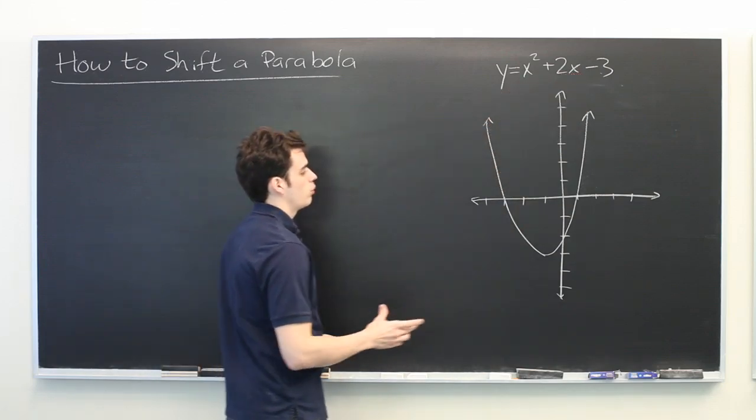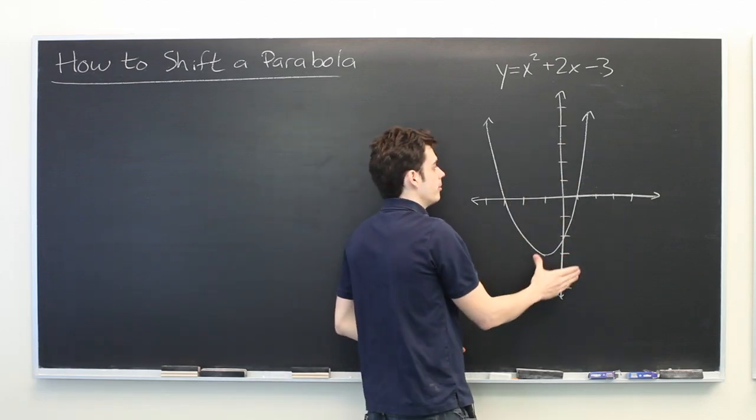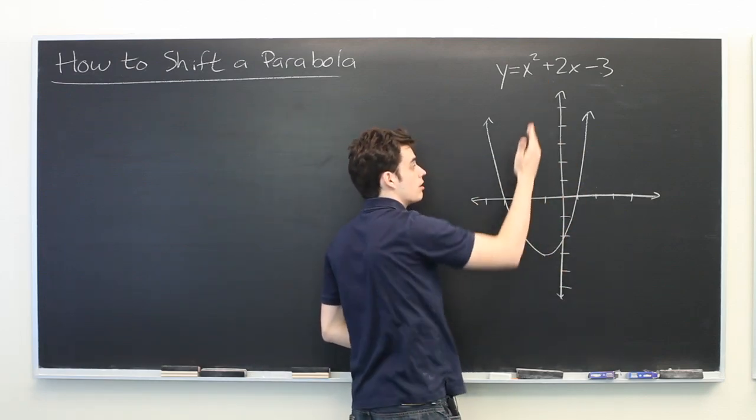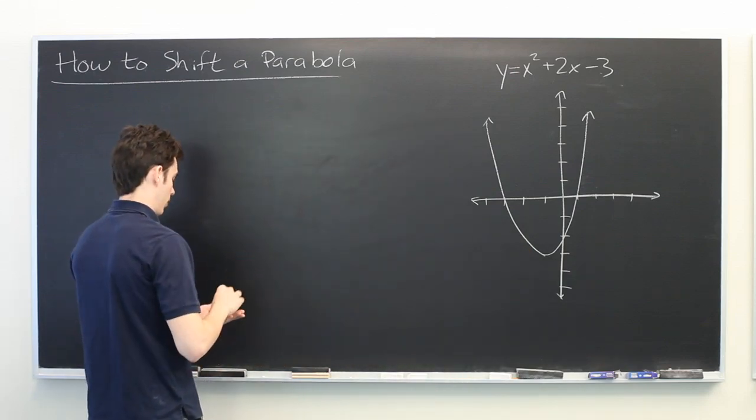And our question is, if we want to shift the graph to the left or right or up and down, what changes do we need to make to the original equation? We'll start with vertical shifting which is a little bit easier.